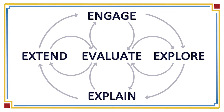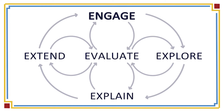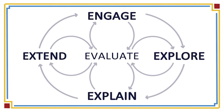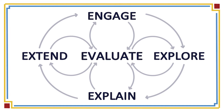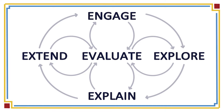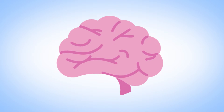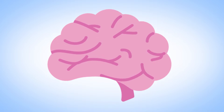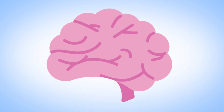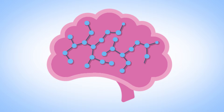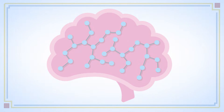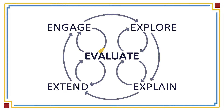Each phase has a specific function. When learners work through the five phases as a system, they construct meaningful knowledge through active learning. The 5E model is grounded in cognitive research that emphasizes the importance of building new conceptual understanding by connecting it to existing knowledge. The sequence of the 5Es helps learners make these connections in a way that follows the natural progression of learning in the brain.